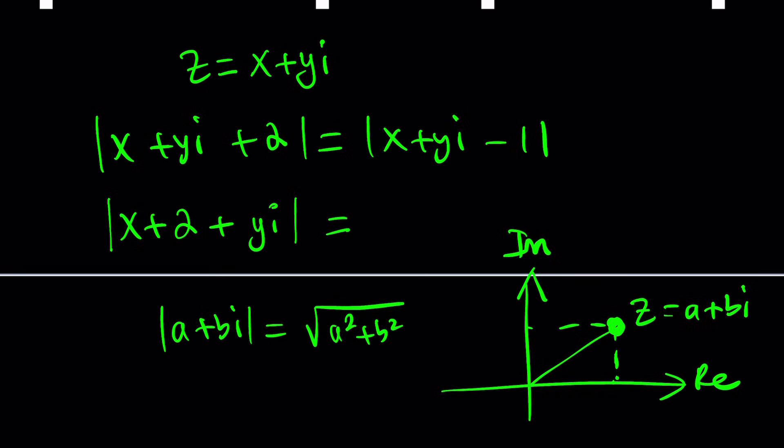But the absolute value is the distance from zero. Now, by the Pythagorean theorem, of course, this works in any quadrant, it is the square root of A squared plus B squared. In other words, the distance formula.